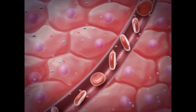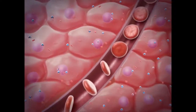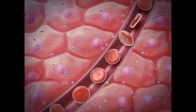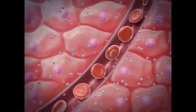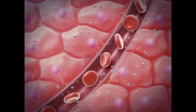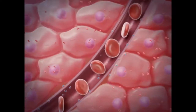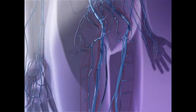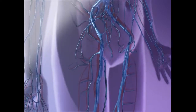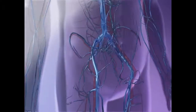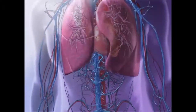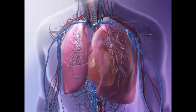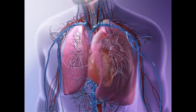Meanwhile, the waste product, carbon dioxide, diffuses into the bloodstream, where it is carried inside red blood cells and in plasma. The deoxygenated blood travels through the vasculature and back to the lungs, where carbon dioxide is expelled from the body.